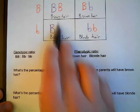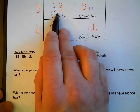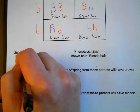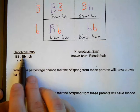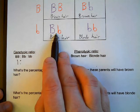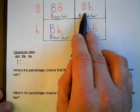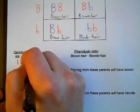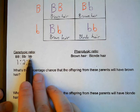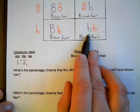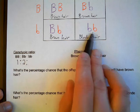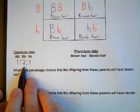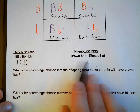We just have to look in the Punnett square and figure out how many of each are present. I only see one capital B capital B — it's right here — so I put a one for that. For the heterozygous capital B lowercase b, I see two of them. And the last one is lowercase b lowercase b, or homozygous recessive — I only see one of those. So here's my genotypic ratio: one to two to one.